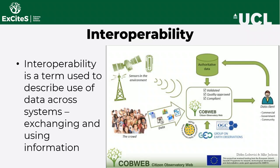The final concept worth covering when talking about citizen science is interoperability. Interoperability refers to a set of standards — official agreements about structure, content, and other technical details — which facilitate the ability of one computer system to exchange data and information with another system. Here we see the general conceptual framework of the Cobweb project, with relationships to the Open Geospatial Consortium, the Group on Earth Observation, and the European INSPIRE Directive. All these bodies set standards on how information about the environment can and should be shared, and this needs to be taken into account when organizing and sharing citizen science data.